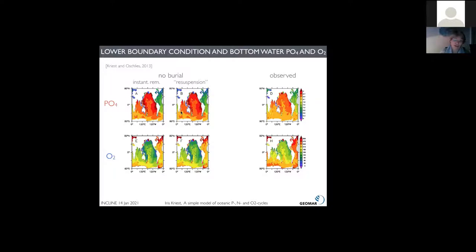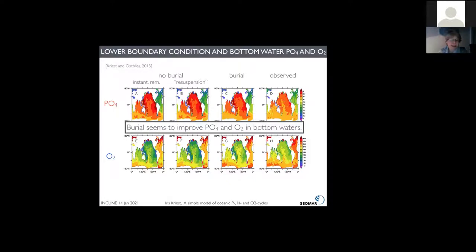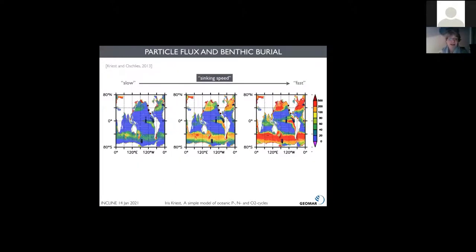In fact, it overestimates strongly the phosphate and underestimates the oxygen in the deep northern North Pacific. Now, if I open up the seafloor to assume burial at the seafloor and resupply all the buried matter after a year by the river runoff, then the pattern looks much nicer and compares much better to observations. It seemed very encouraging at first, so burial seems to improve phosphate and oxygen in bottom waters. Very good.